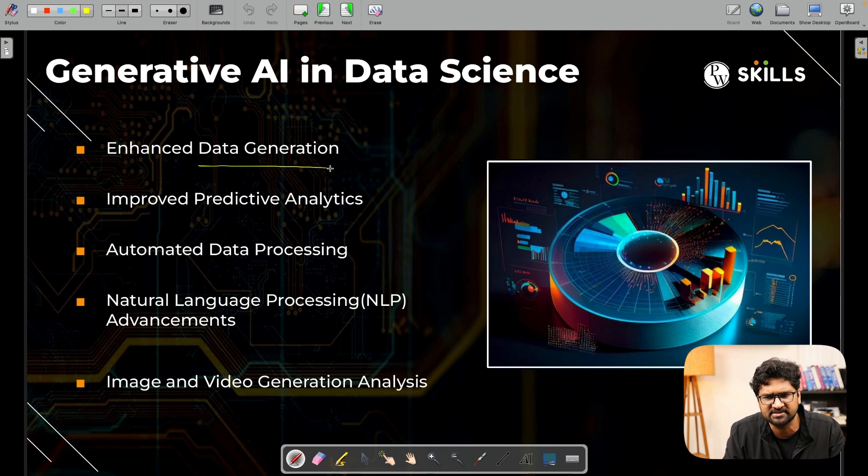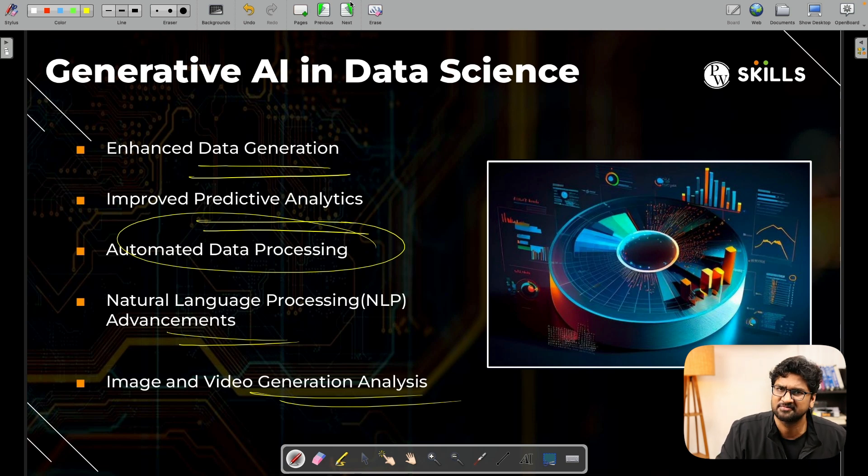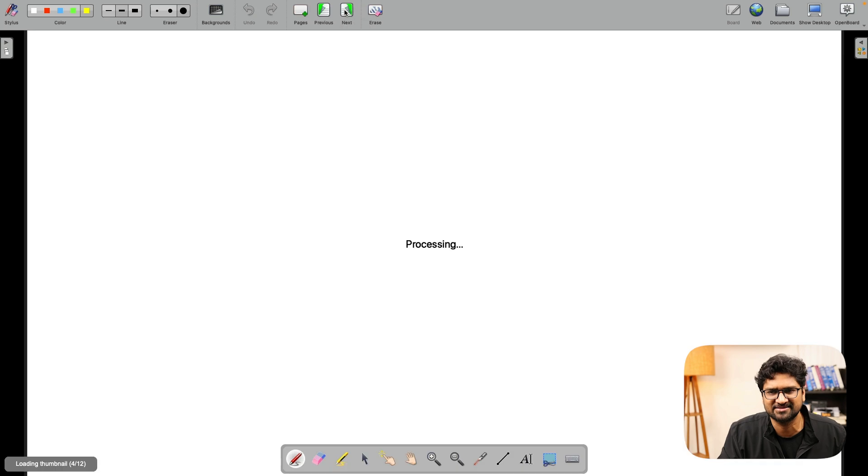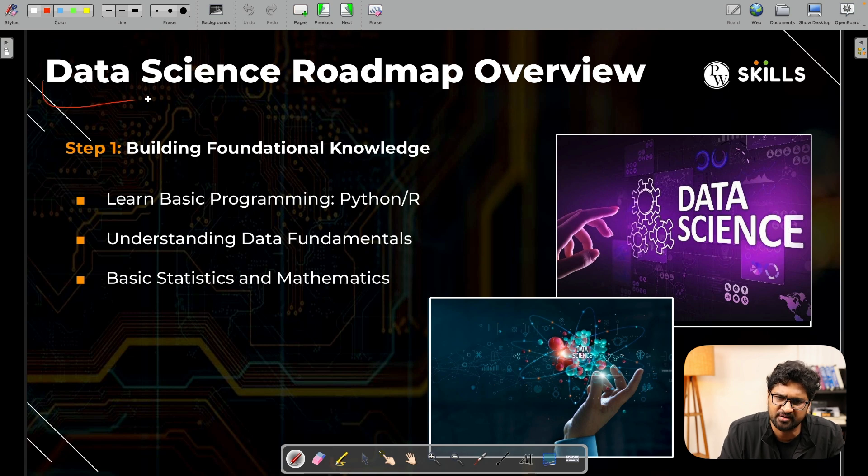We've already talked about how we can have enhanced data generation, improved predictive analytics, automated data processing, natural language processing, which typically ChatGPT can use in the form of natural language processing. There are also deepfake videos and audios on social media, done with the help of image and video generation analysis. Once we've understood the fancy part of generative AI, let's try to see the pathway to learn it.